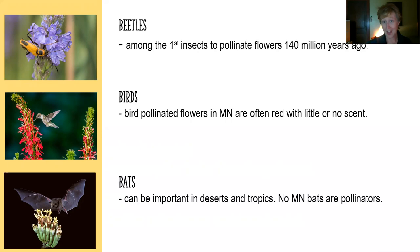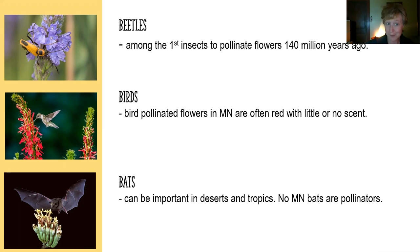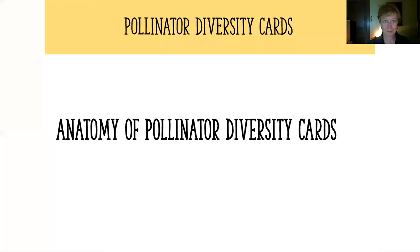There are also birds that pollinate. In Minnesota, we have some hummingbirds that are pollinators. Bird-pollinated flowers tend to be red and often have little or no scent. Bats can be important pollinators in deserts and tropical systems, but even though we have bats in Minnesota, none of them here are pollinators.